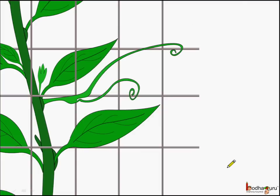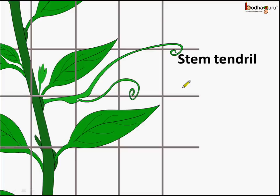What do we see here? Here we see tendrils. And what are these? Actually these are the modified stems. So in certain plants the stem gets modified into thin tendrils which are used for climbing a support or holding on to a support.